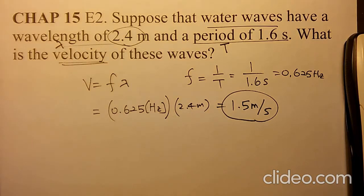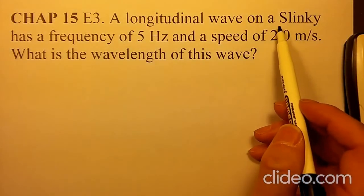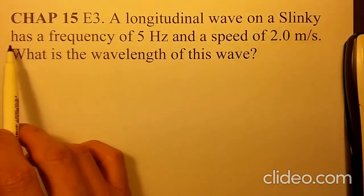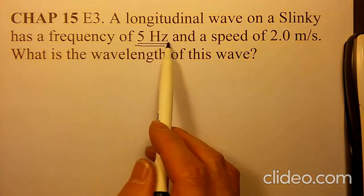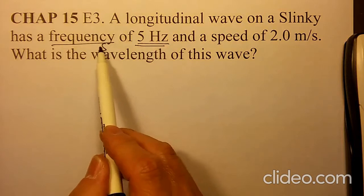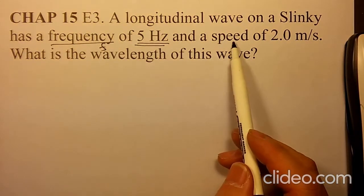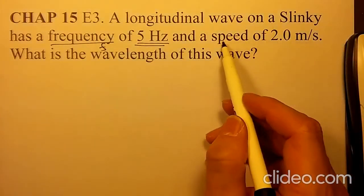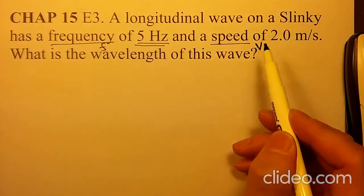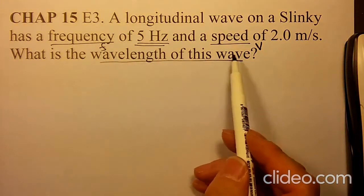Thank you and bye now. Chapter 15 E3. A longitudinal wave on the slinky has a frequency of 5 hertz, F, and a speed of 2.0 meters per second, V. What is the wavelength of this wave?